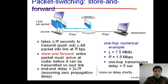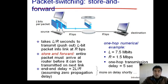To summarize: transmission delay is the time required by a node or router to push all the bits present in a packet into the link. Its formula is L/R, where L is the number of bits in a packet and R is the transmission rate of that particular link.